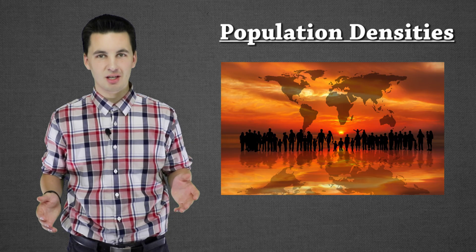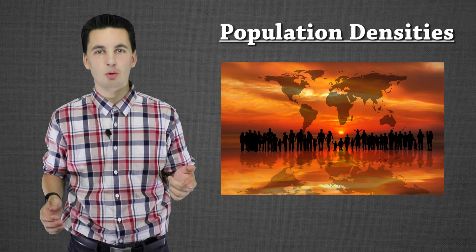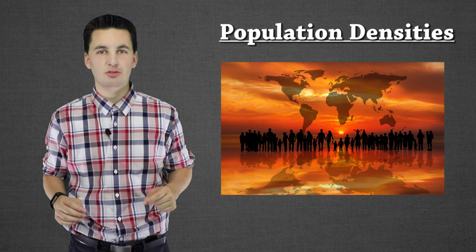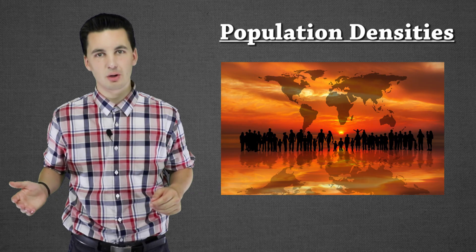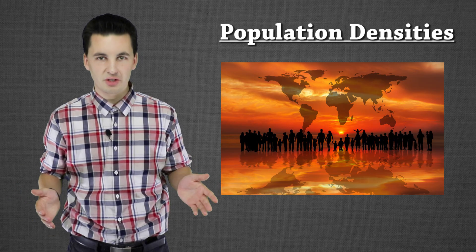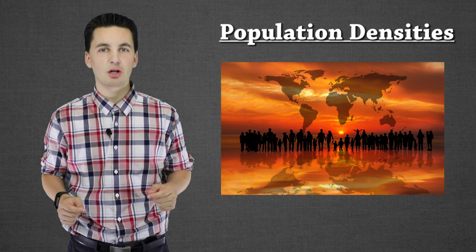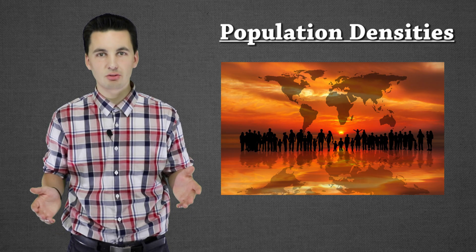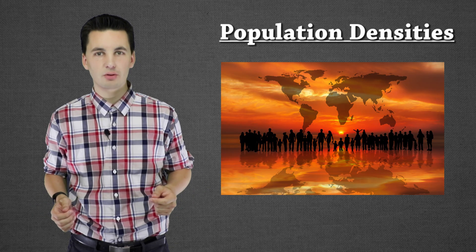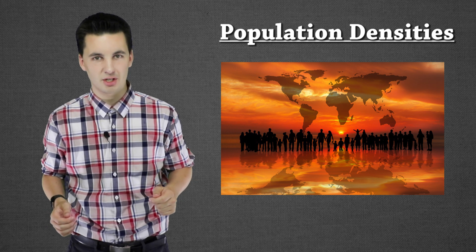Today we're going to be talking about density — physiological density, arithmetic density, and agricultural density. We'll be discussing some world trends with population throughout the video as well. The main focus is on density. We're going to be looking at not just what these things are and what they mean, but how we can use these numbers to understand society, countries, and the future. And why are these densities so important for us as geographers to understand, and even more important for our policy makers to understand?